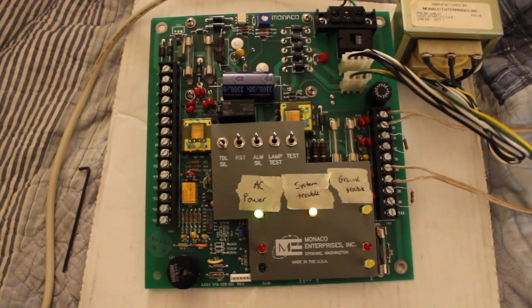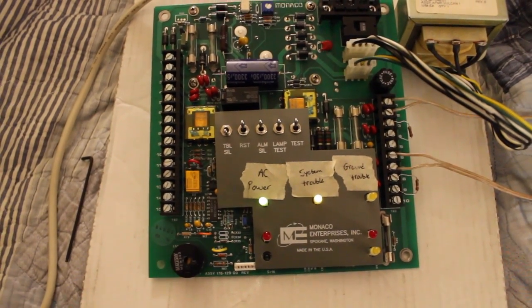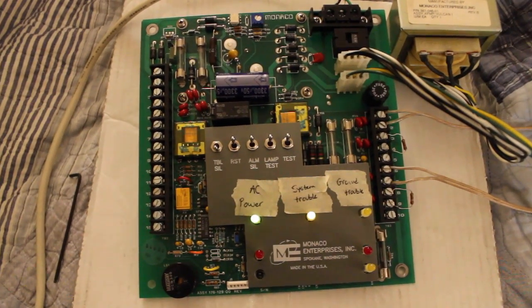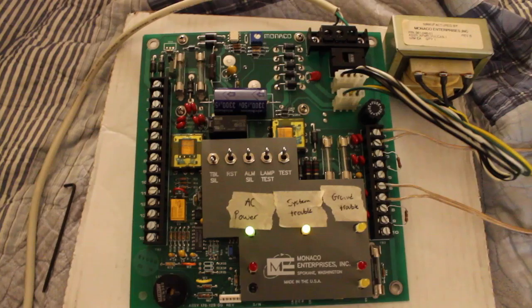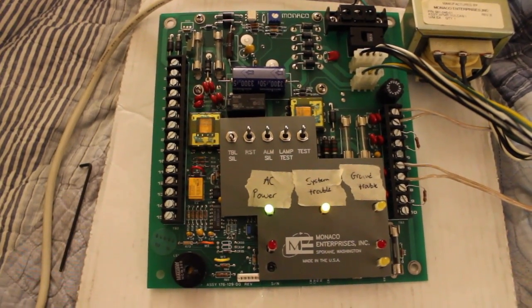It's now time for Monaco Vulcan 1 System Test 6. And what's changed with the panel? Take a wild guess. Absolutely nothing. But that's not going to stop us from having some fire alarm fun.